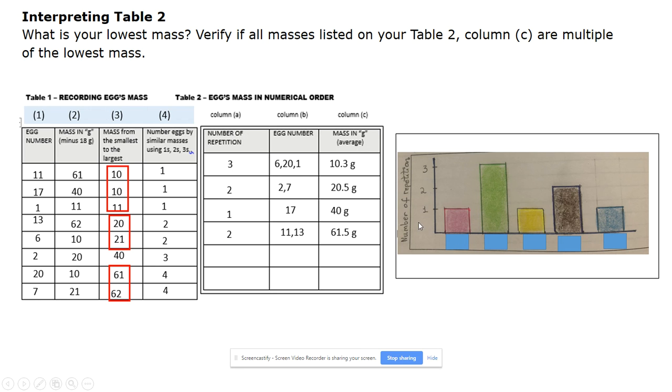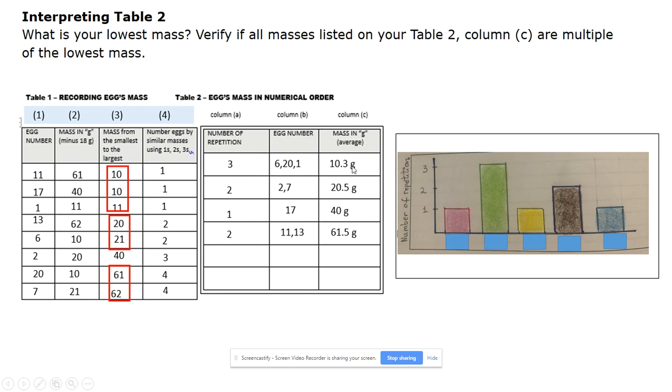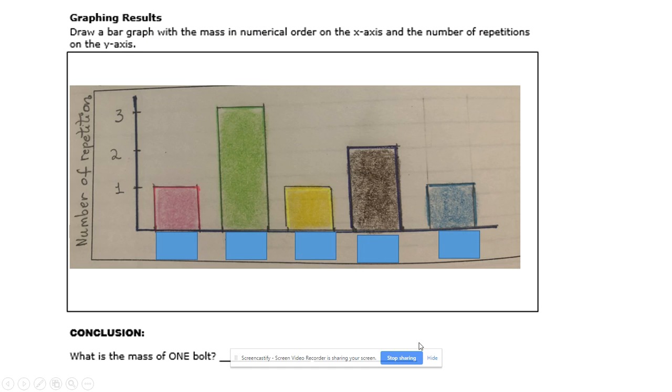Down here on the bottom line, you are going to record the lowest mass number that you had, which in this case was 10.3. And write it on the line right here. And that will conclude the lab and show you that you know how to find the mass of unseen objects.